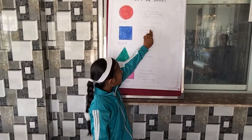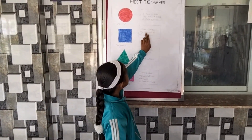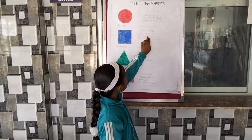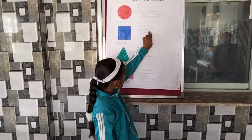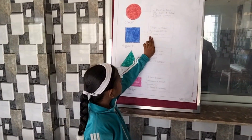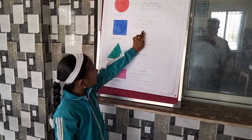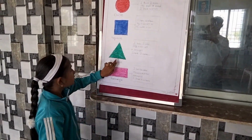Square. I have four sides. My sides are all the same.